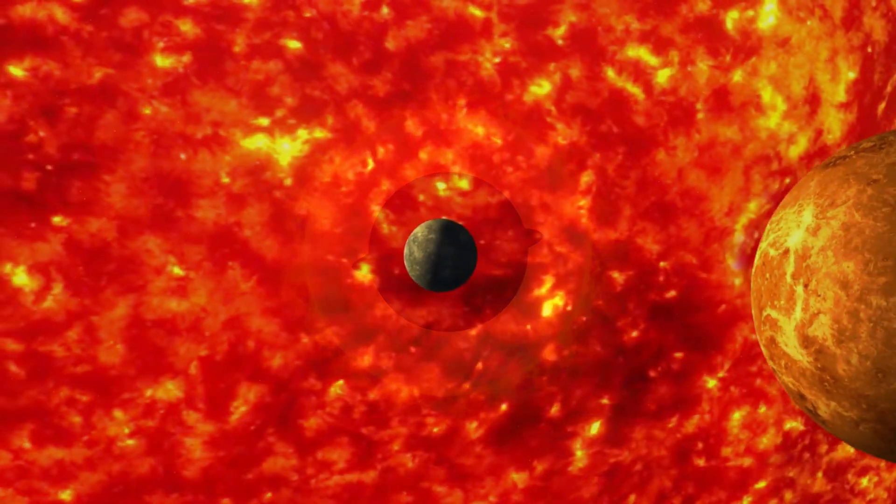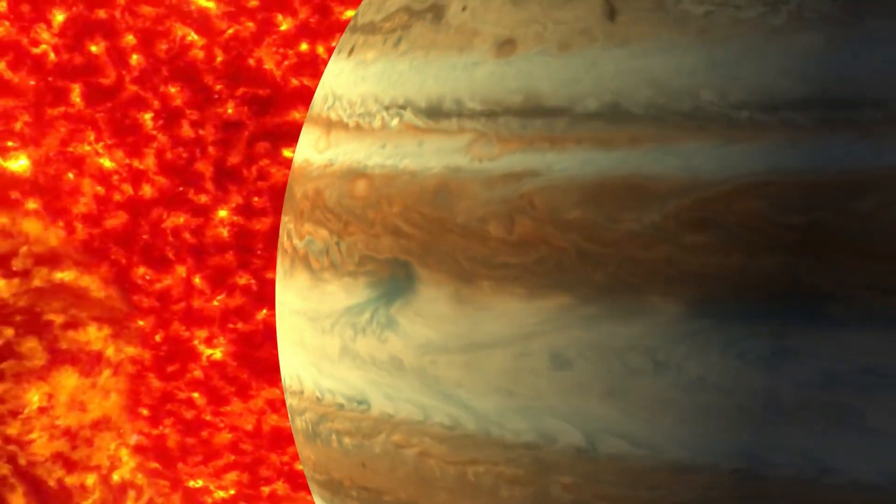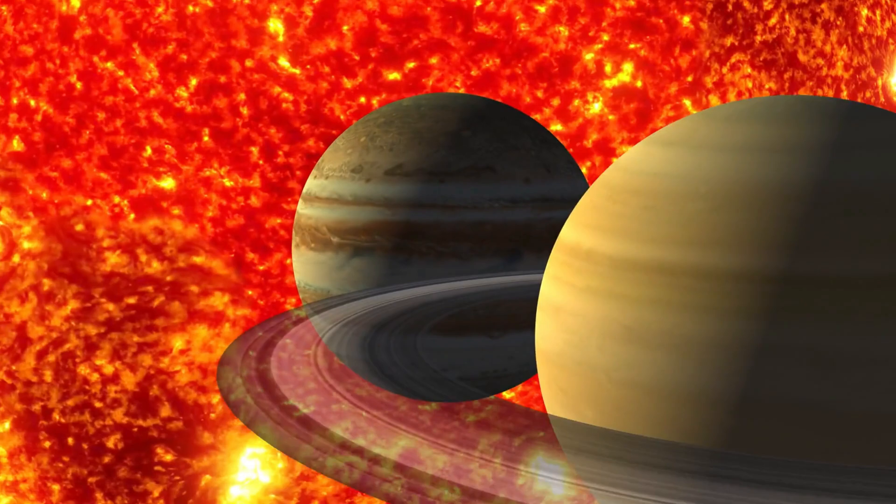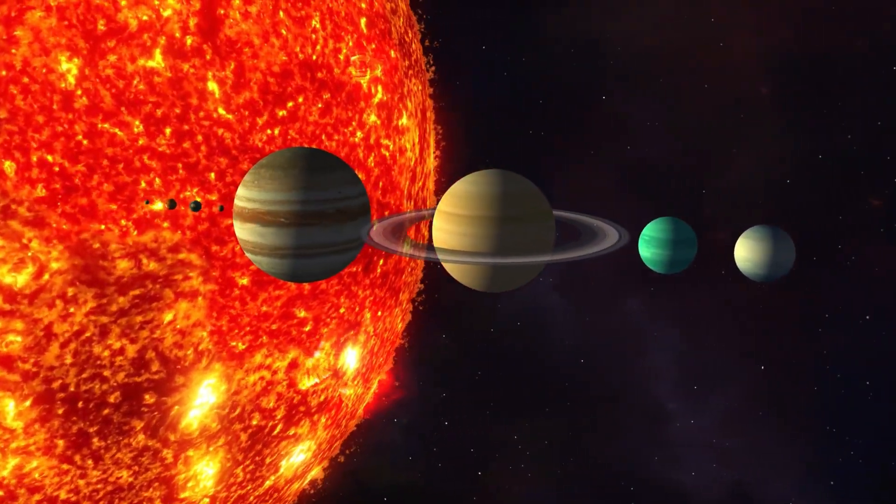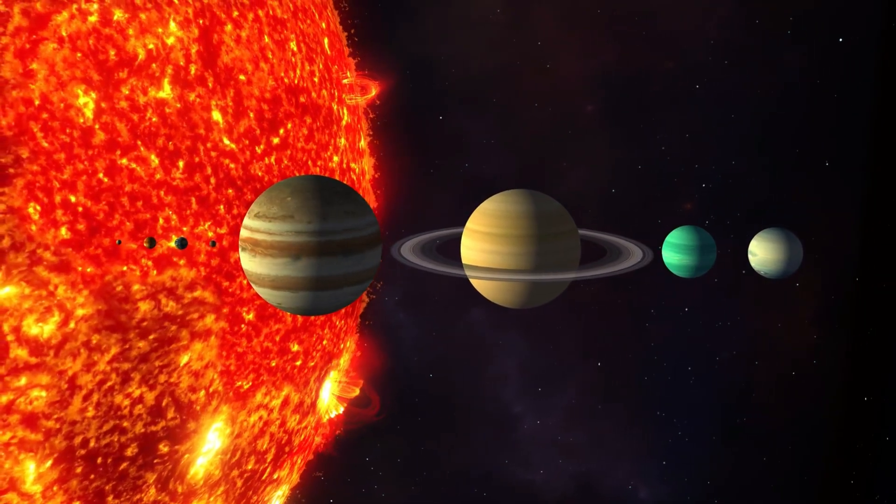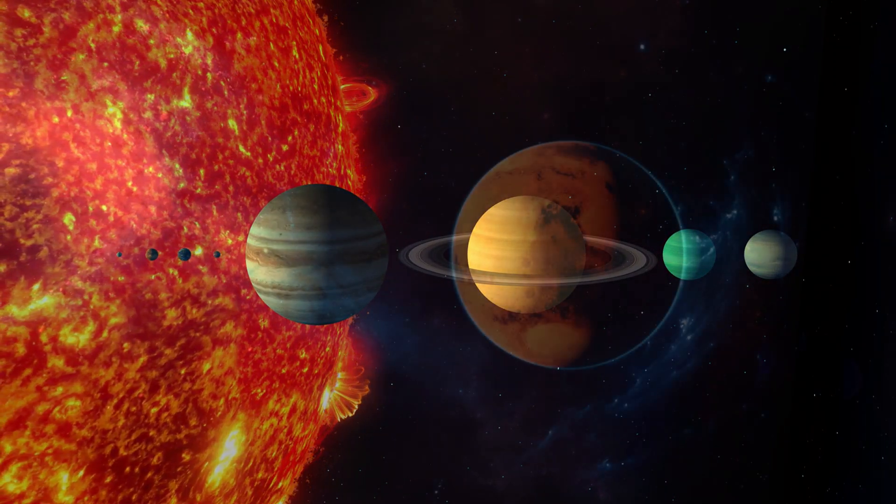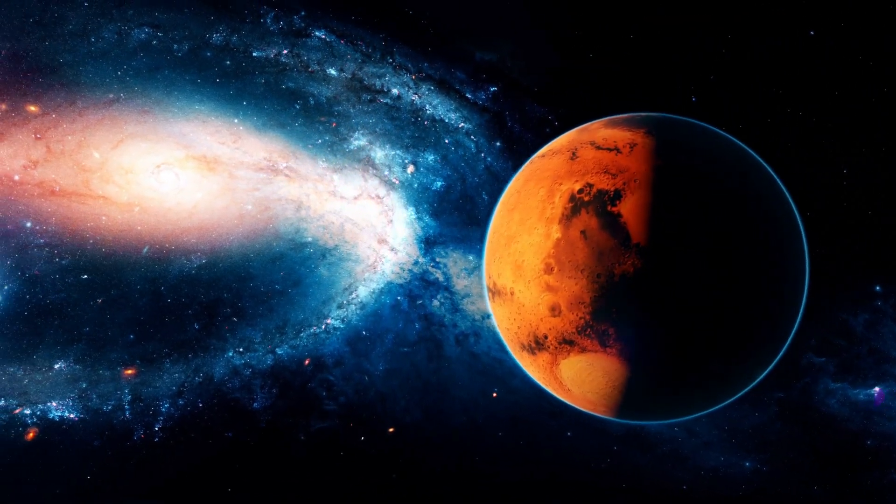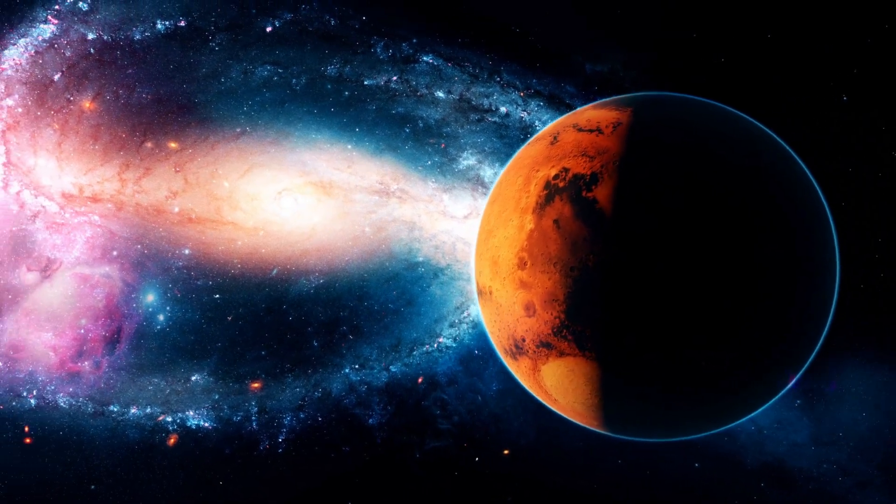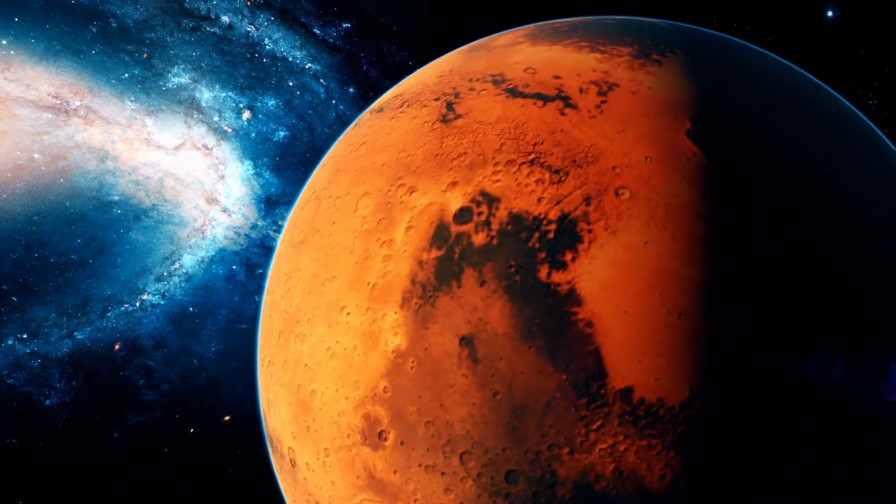Our solar system is vast beyond comprehension. The distance between Earth and Mars? At its closest, about 34 million miles. And yet, in cosmic terms, that's just a stone's throw away.